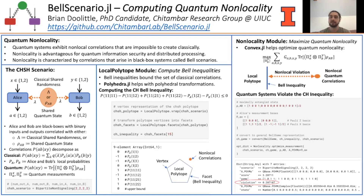This is a fascinating phenomenon where quantum systems can become more strongly correlated than classical ones. These nonlocal correlations are impossible to recreate using classical physics, and as a result, nonlocality can be used to prove quantumness of untrusted devices. This is very important in ensuring that quantum communications are secure.